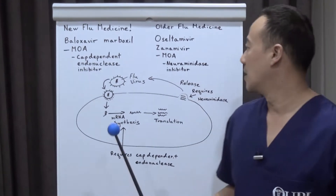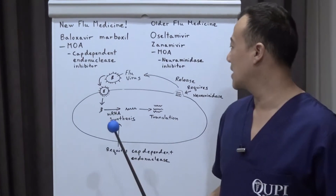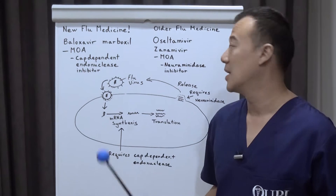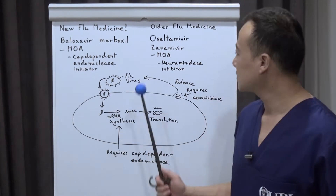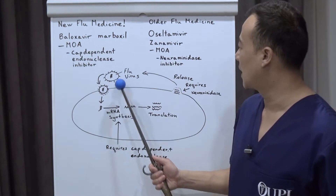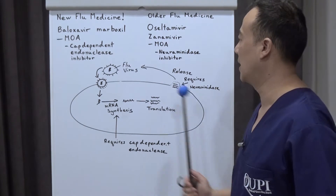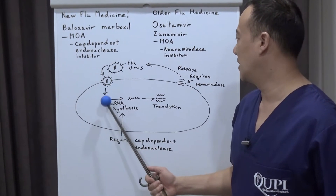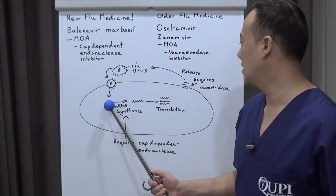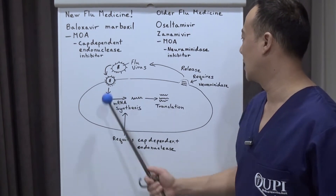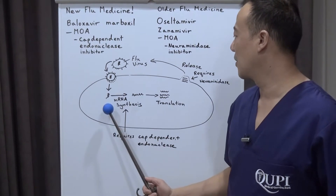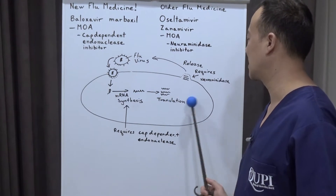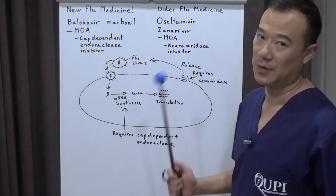You're a medical student, you should know this. So when a patient asks you about this new flu medicine, you can explain to them what it does. Here's a flu virus, here's your cell. The flu attaches to the cell, the RNA and DNA exchange in the cell, and it has to go through an mRNA synthesis before it can get translated into new flu viruses.